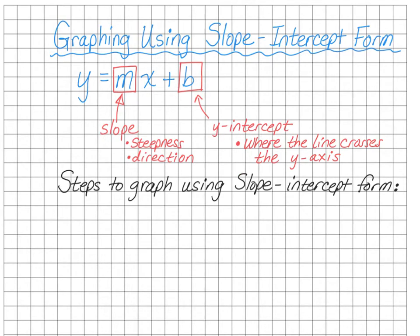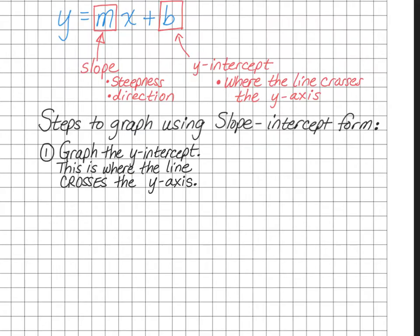There are three steps for graphing in slope-intercept form. Step one is to graph the y-intercept, which tells you where the line crosses the y-axis. For example, let's say we wanted to graph y equals two-thirds x minus 4. Remember that the y-intercept is the number that is added or subtracted after the x. In this case, our y-intercept is negative 4.